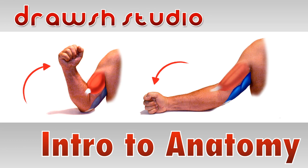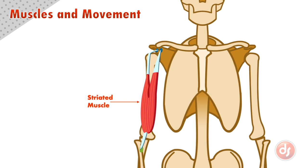Muscles are a special tissue made of striated fibers that create movement in our bodies. To understand the movement of a specific muscle, we need to know the origin and insertion.